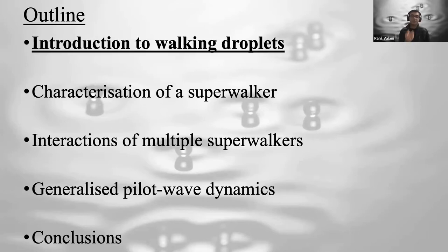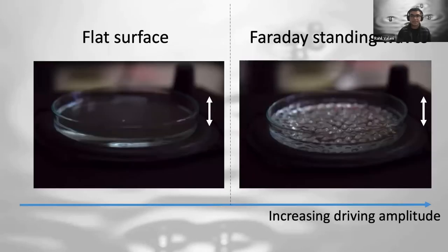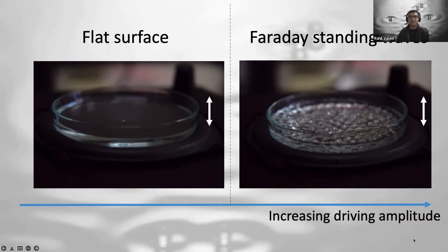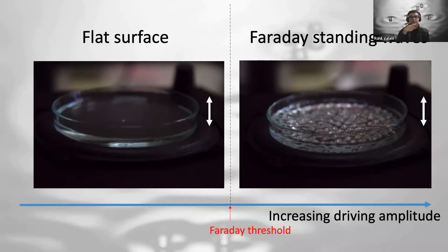I'll start by introducing the system of walking droplets. Back in 1831, Michael Faraday observed that when a container filled with liquid is vibrated vertically, the free surface of the liquid can become unstable to standing waves. These standing waves, which we now know as Faraday waves, emerge above a certain threshold of the driving of the bath. They are typically subharmonic waves, oscillating at half the frequency of the driving.